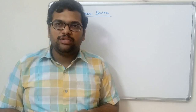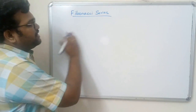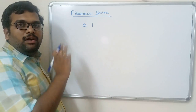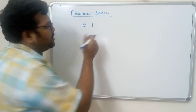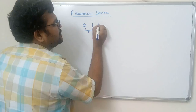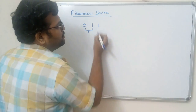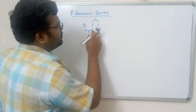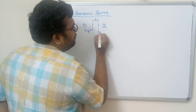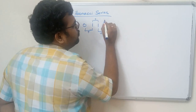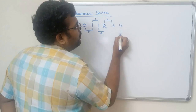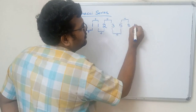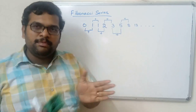First of all, what is meant by the Fibonacci series? The first element will always be 0 and the next element will be 1. After taking 0 and 1, the third element will be the addition of the first two numbers — 0 plus 1 is 1. The addition of the previous two elements gives the present element: 1 plus 1 is 2, 1 plus 2 is 3, 2 plus 3 is 5, 3 plus 5 is 8, 5 plus 8 is 13, and so on. The first two numbers are always 0 and 1.